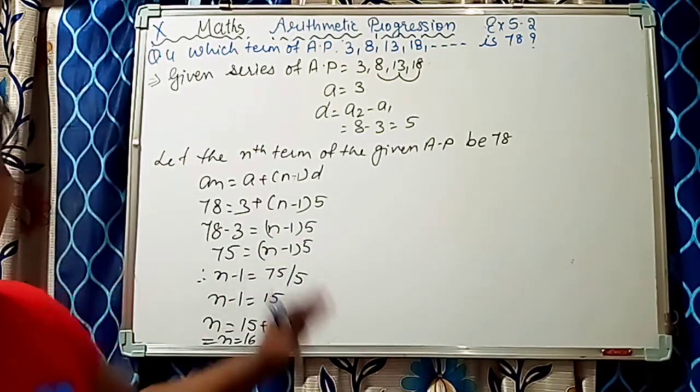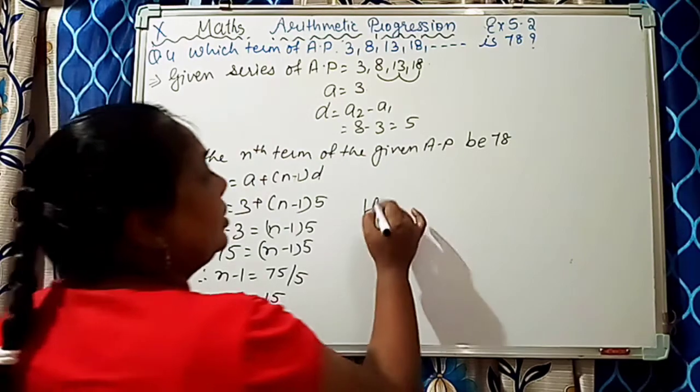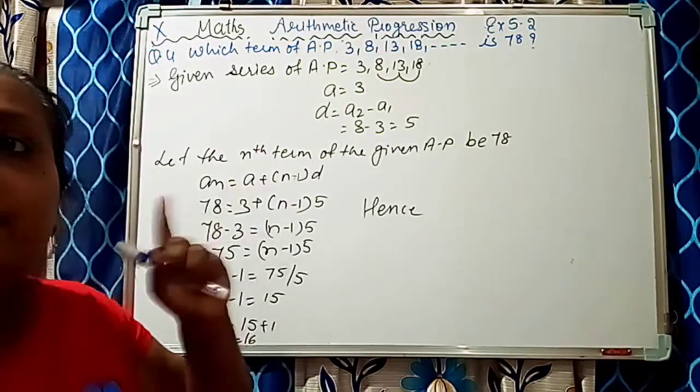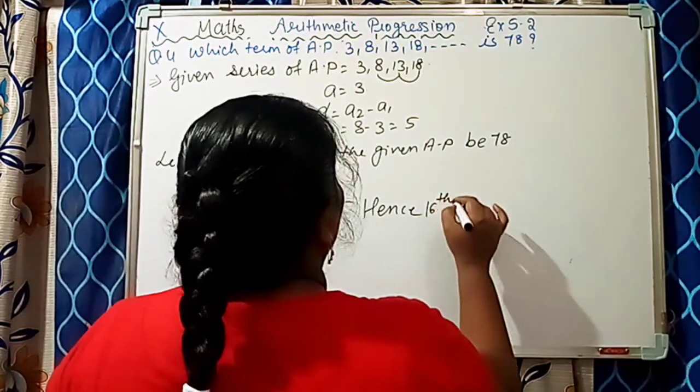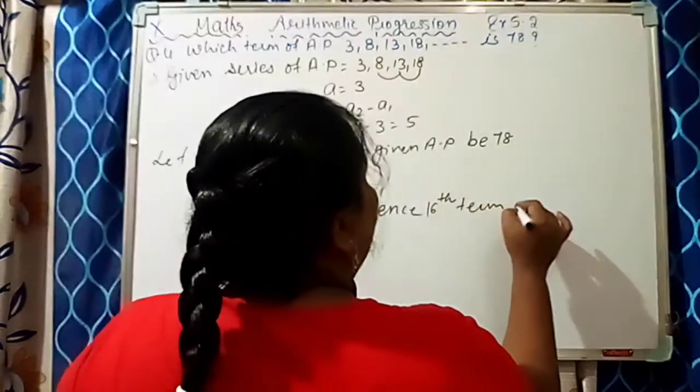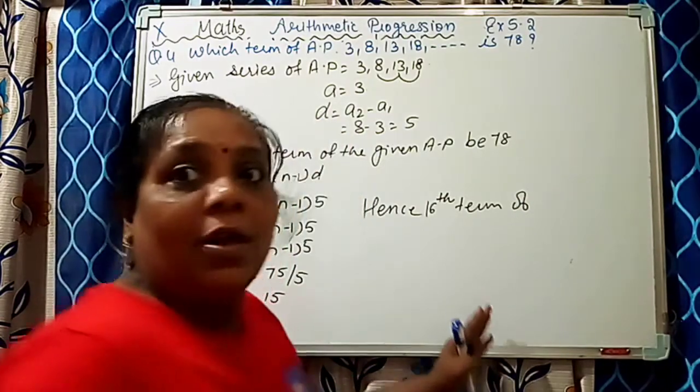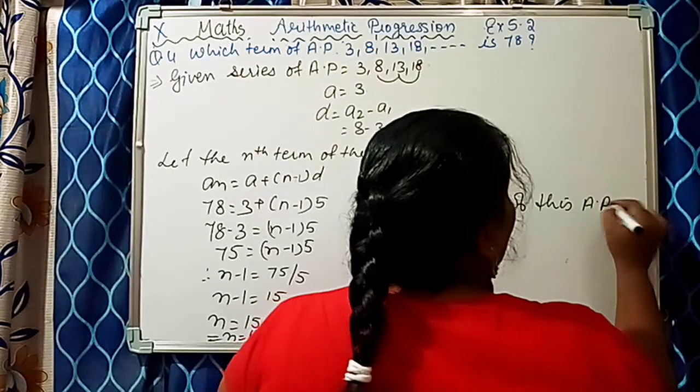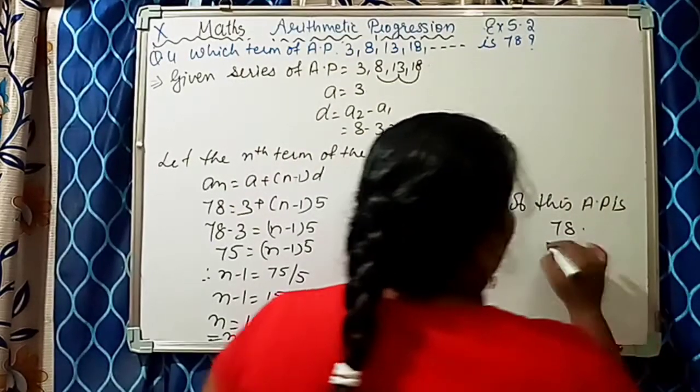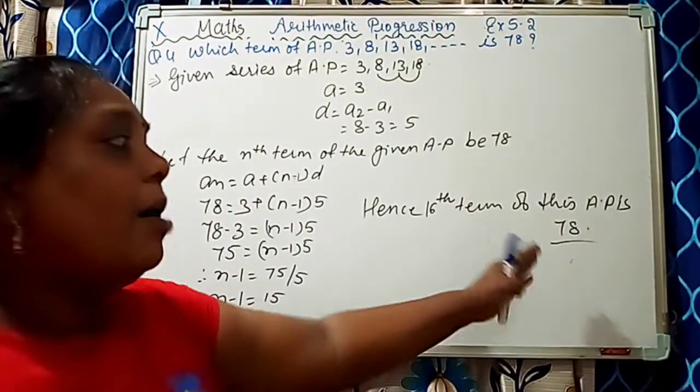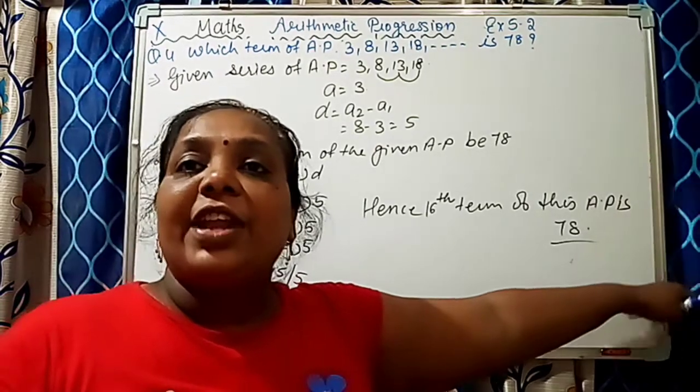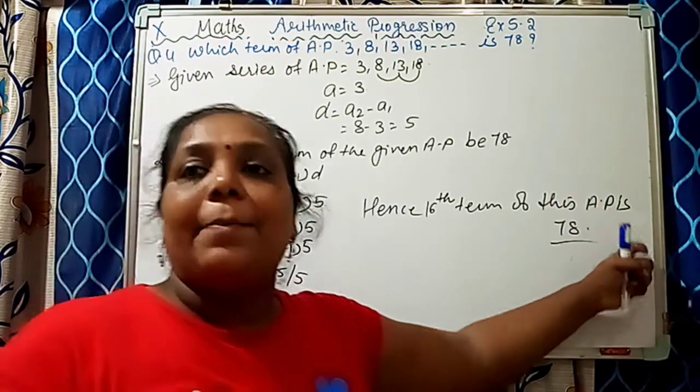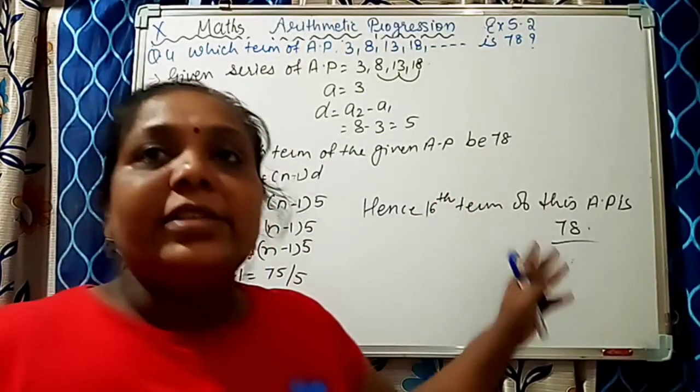Hence, the Nth term is 16. The 16th term of the AP is 78. If we do the 16th term then only we get the AP 78. This sum we got it. Very easy method I had explained you.